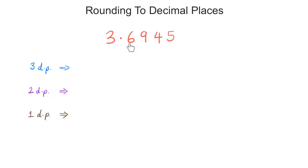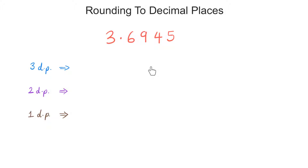Here we have the number 3.6945, and we're being asked to round it to three decimal places. To round it to three decimal places means, starting from the decimal point, count 1, 2, 3, and then put a line here.